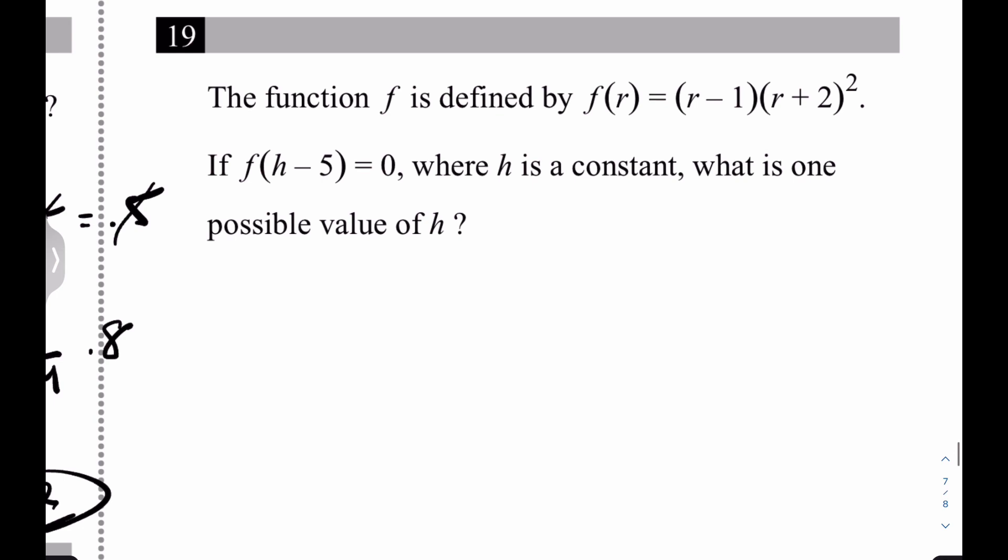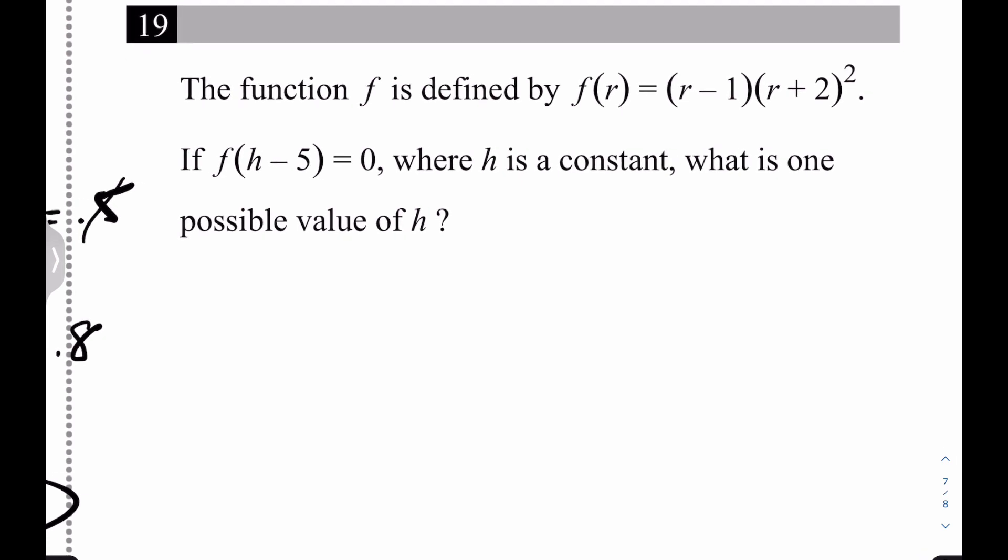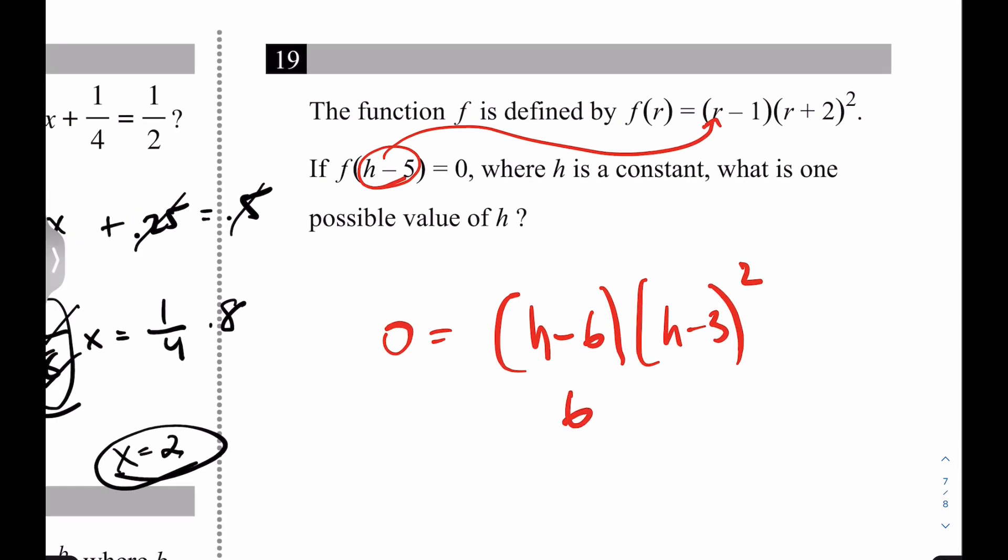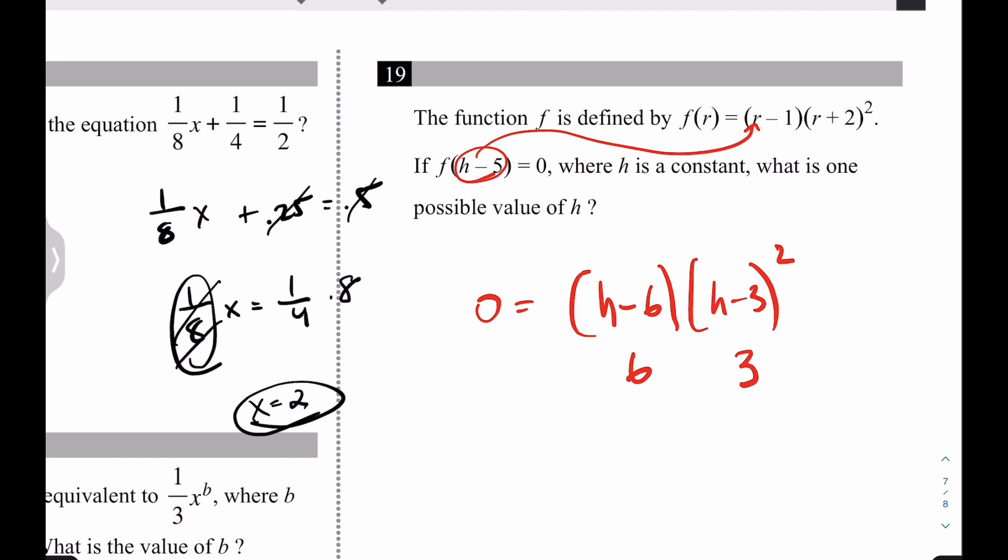Let's come over here for 19. For 19, it says if h minus 5 equals 0, where h is a constant, what is one possible value of h? Wow. This is difficult. I don't know what this is. But really, whenever it says f of, you basically plug it in. So plug this in for r. You have h minus 5 minus 1, so h minus 6, times h minus 5 plus 2, so h minus 3, squared equals 0. Thus, what are the answers? The answers are 6 and 3, and really, either of those should work. Sweet. I think that's right. Yep. Perfect.